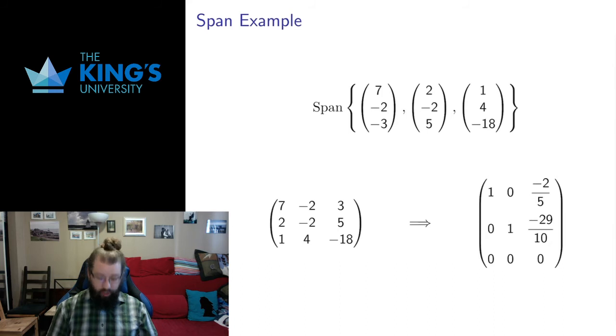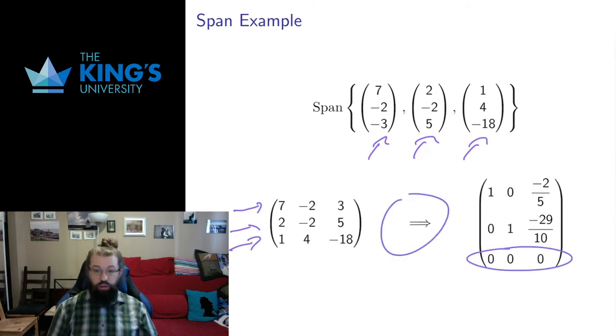Here's another example in R3. I've got three vectors. I put them in again as rows, so I sort of have to flip them. I row reduce, and in this case, I get a row of zeros.